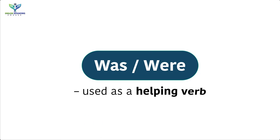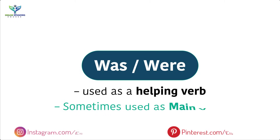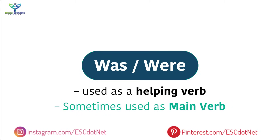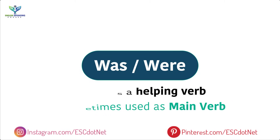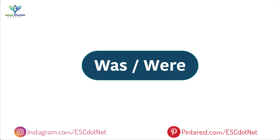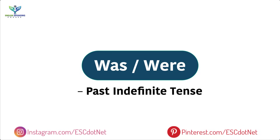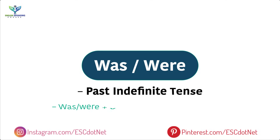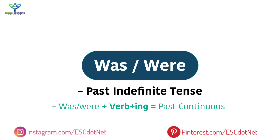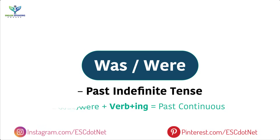'Was' and 'were' are used as helping verbs, and sometimes they are used as main verbs. If 'was' or 'were' is used alone in a sentence, the sentence is in past simple tense. If 'ing' is added to the verb — that is, 'was'/'were' plus verb plus 'ing' — then it will be past continuous tense.